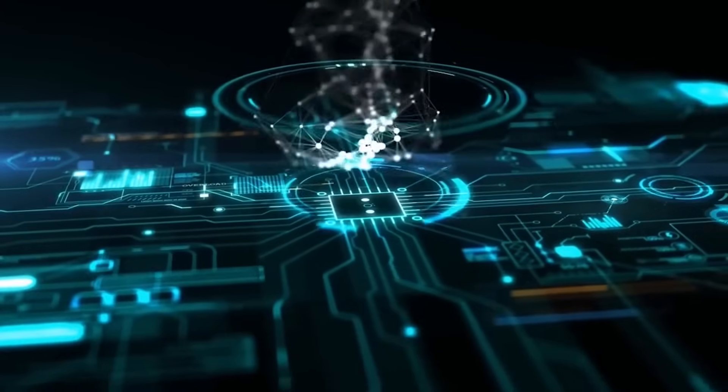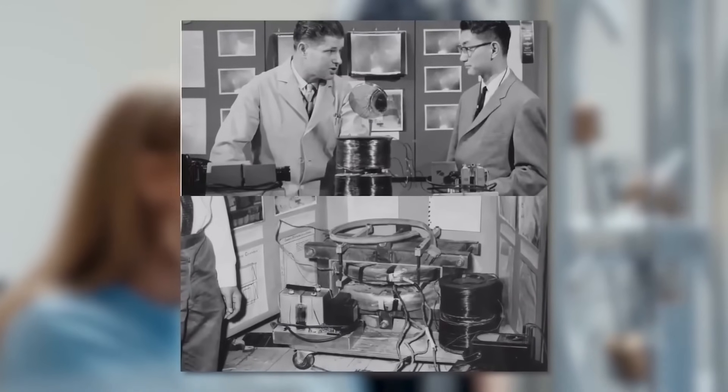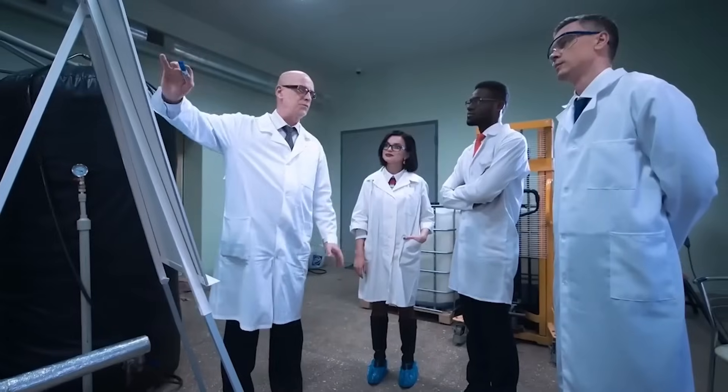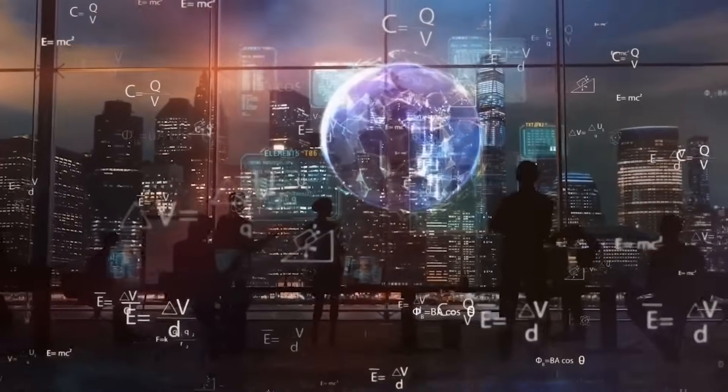Kaku's unique ability to make high-level theoretical physics engaging and relatable stems from a lifelong passion for the field. Born in 1947 in San Jose, California, to Japanese-American parents, Kaku demonstrated an early and intense scientific curiosity. In high school, he famously built a functional particle accelerator in his family's garage. That ambition and drive led him to Harvard University for his undergraduate studies and later to UC Berkeley for his Ph.D. in physics.